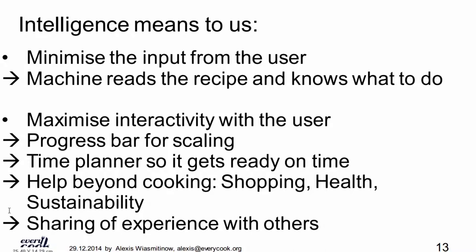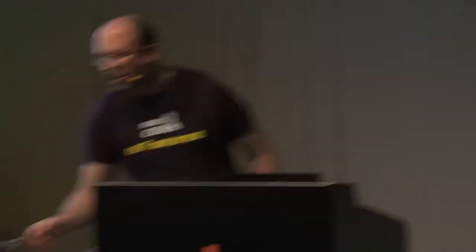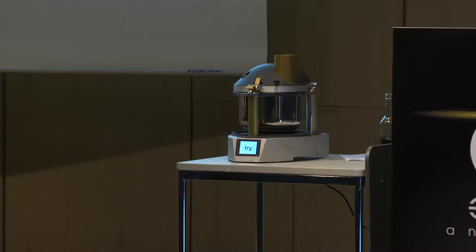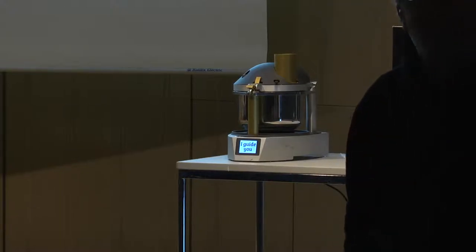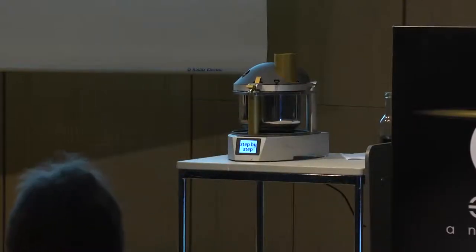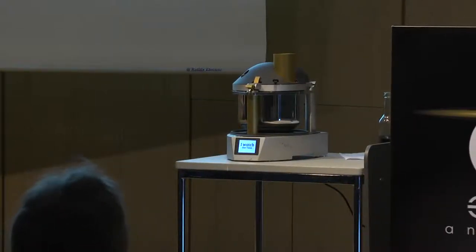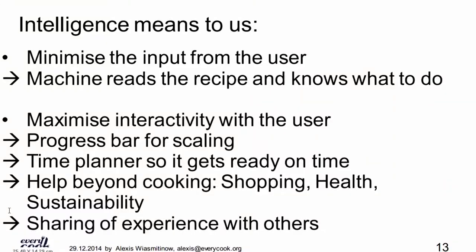We want to maximize interactivity through, for example, a progress bar for scaling. You tell us three people are eating, we calculate how many servings and how much of each ingredient you need. We show you a progress bar on the touch screen: add some rice and stop — that's enough because we have the scale inside. Timing is also a tricky part: for each cooking step we assume a cooking time, and you want to scale this with quantities — cutting or peeling two kilograms of carrots should take about two minutes.